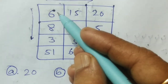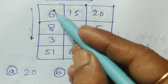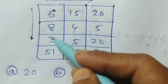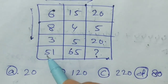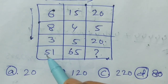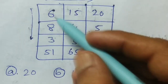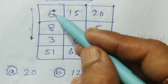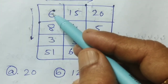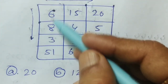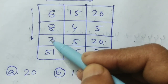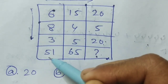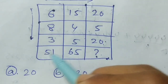Think deeply: the numbers are 6, 8, and 3. How will we get 51? First, try addition: 6 plus 8 plus 3 is not 51. Not possible.